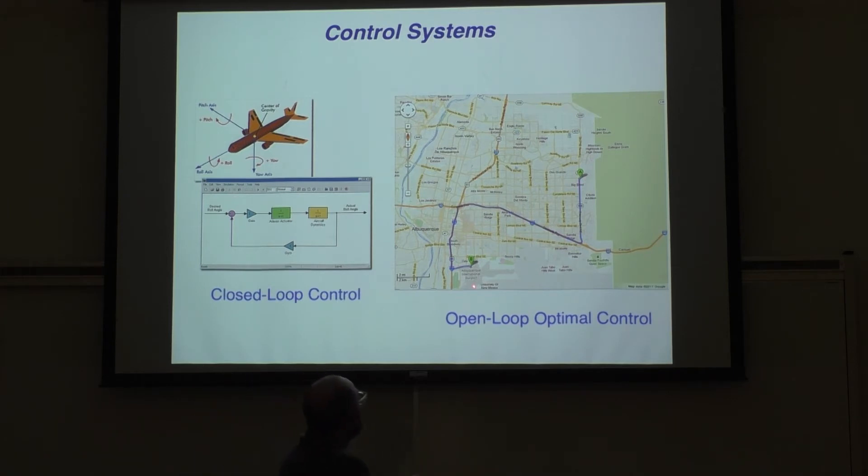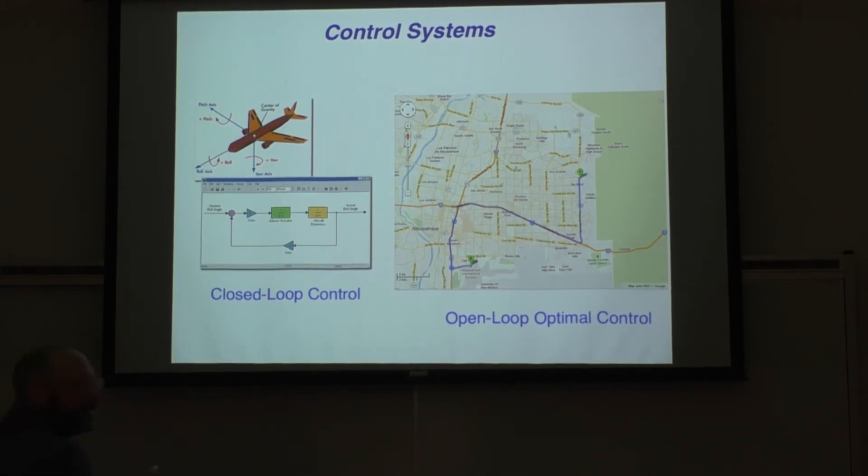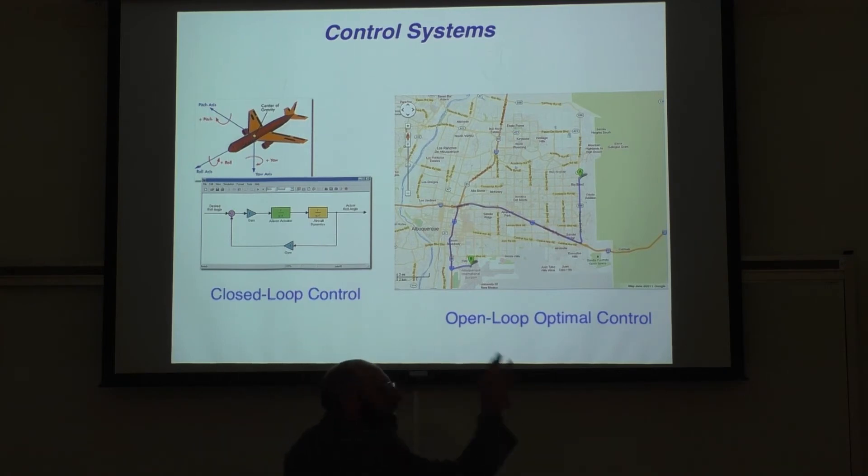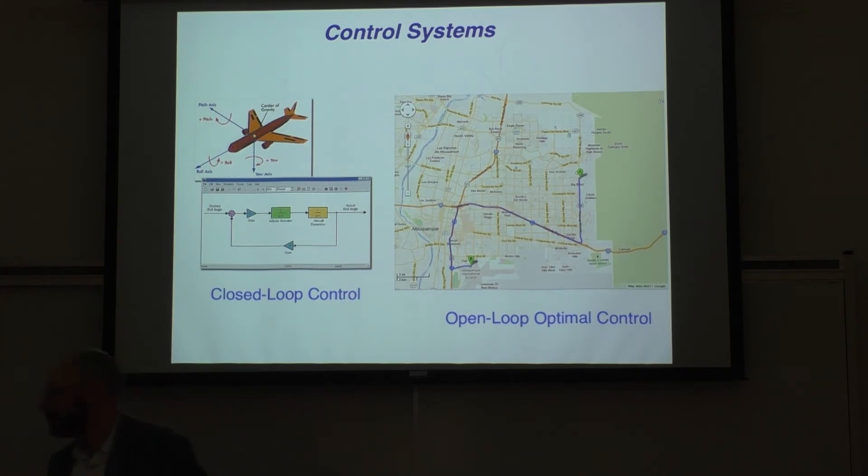Here's a map of Albuquerque. This is where my house is. I wanted to get to the airport, and I looked it up on Google Maps. I said, what's the best route to take to the airport? There's an algorithm that says, given what I know about the traffic patterns in Albuquerque, it's better not to go across Montgomery down to I-25. I should go all the way down here to I-40 and down. I could make this a closed-loop by looking at my phone while I'm driving and adjusting. But if I didn't do that, you know something about the dynamics of the system, and then you decide what's the best route to get from point A to point B.